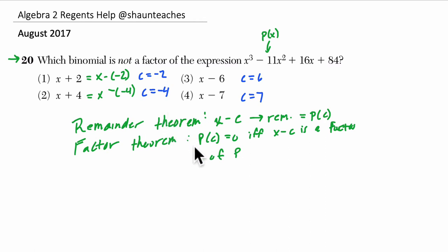So this basically says you plug in c, and what you get based on the remainder theorem, that's the remainder. And if you plug in c and get a remainder of 0, that means it is a factor. That's all the factor theorem saying, that when the remainder is 0, then you have a factor.